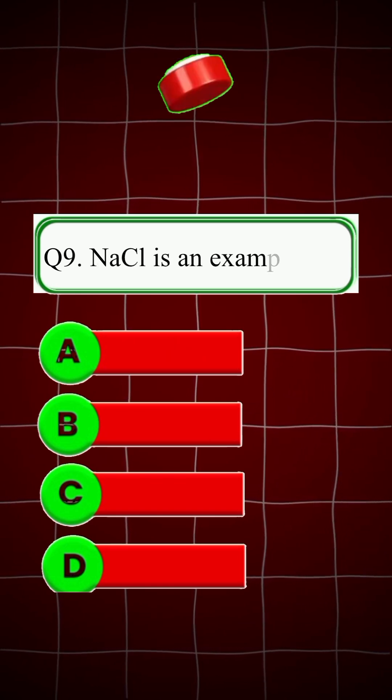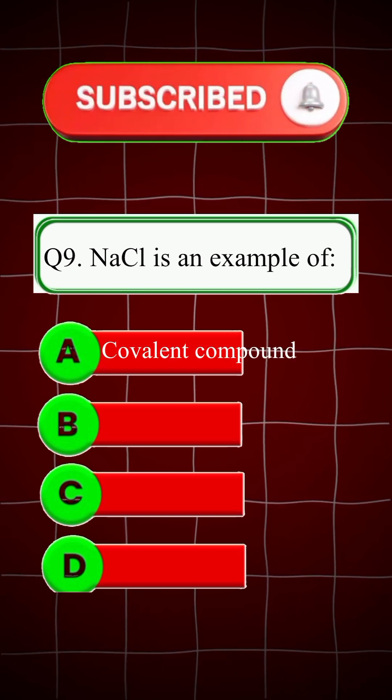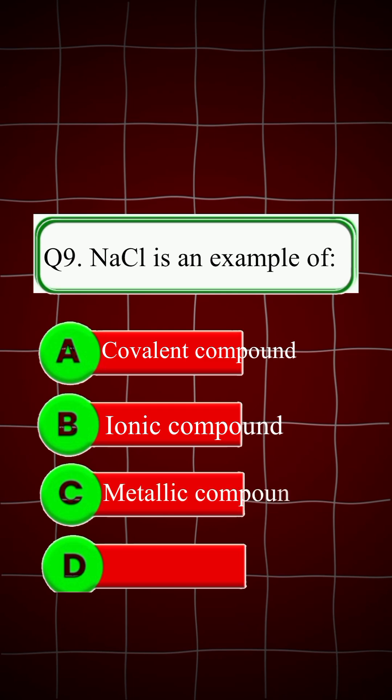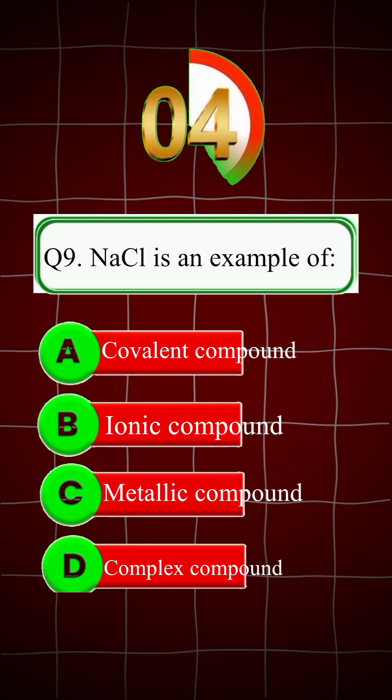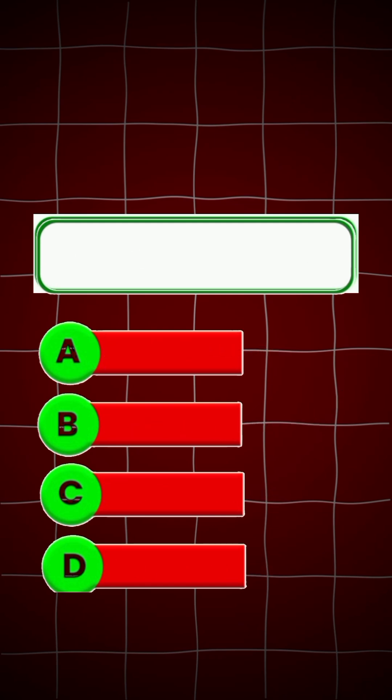Question 9: NaCl is an example of: A. Covalent compound, B. Ionic compound, C. Metallic compound, D. Complex compound. Right answer is B, Ionic compound.